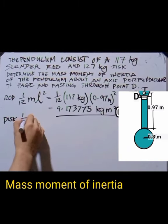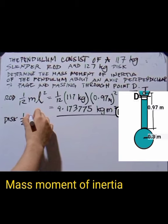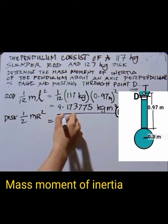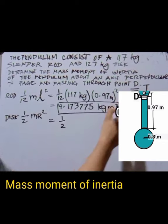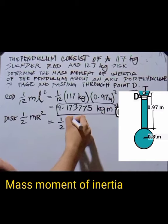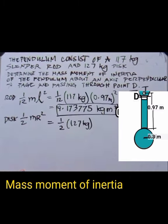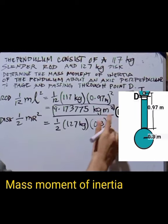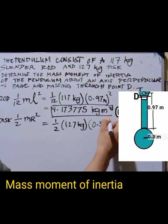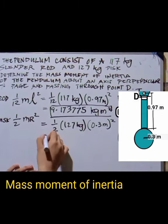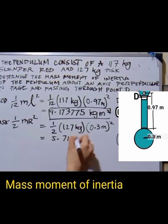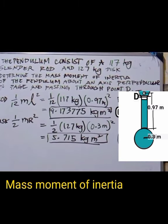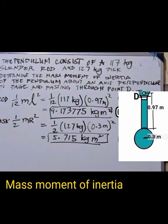For the disc, I = (1/2)mr². Substituting: (1/2) × 127 kg × 0.3² = 5.715 kg·m².